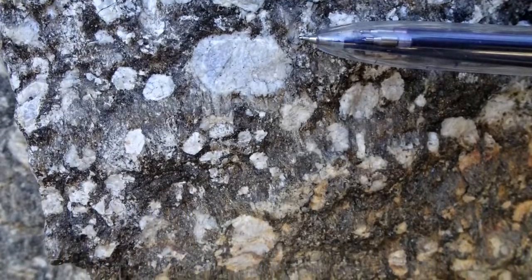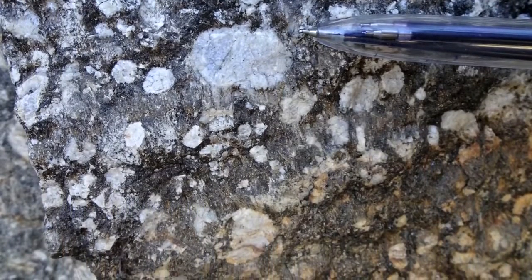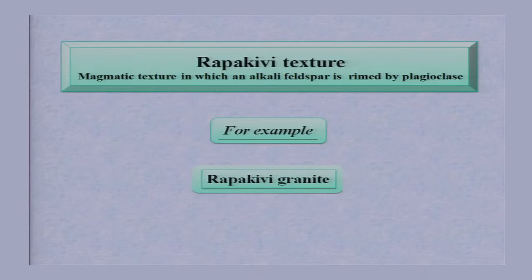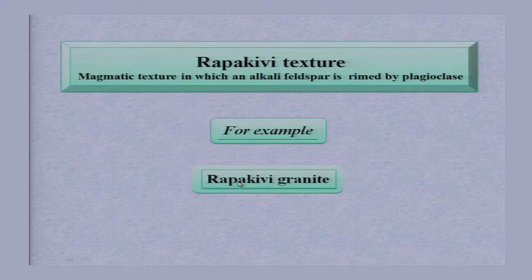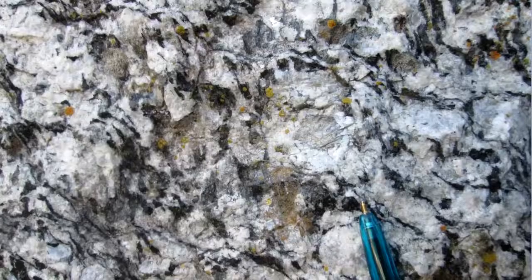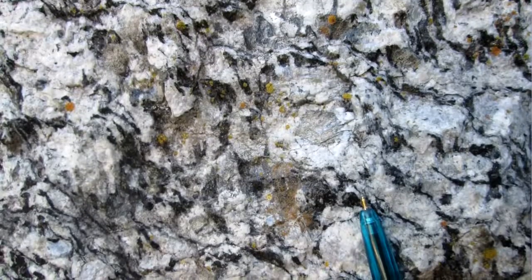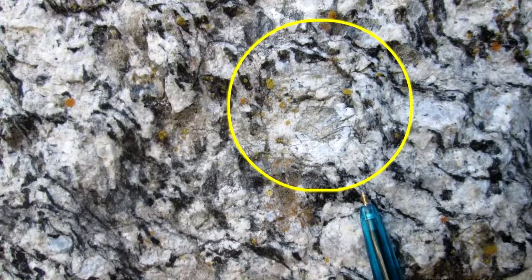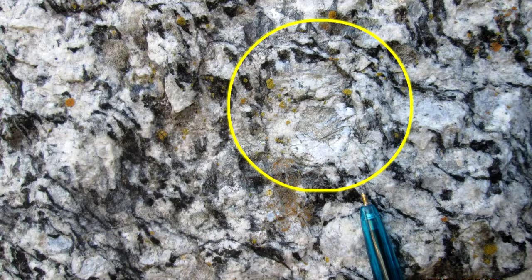Rapakivi texture is found in granite; therefore, we call it Rapakivi granite. We use Rapakivi texture as a prefix here to define a rock. Rapakivi granite shows feldspar — these are rounded feldspar grains without plagioclase rims.